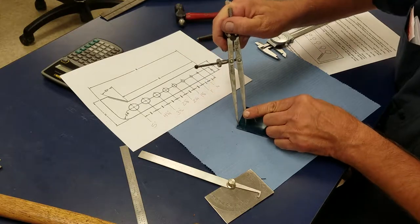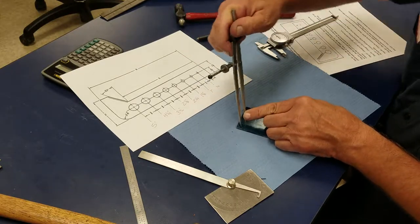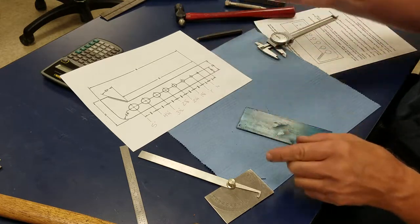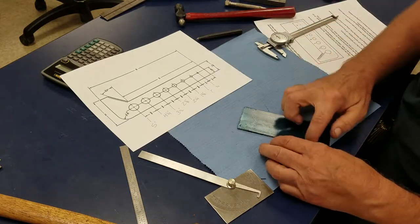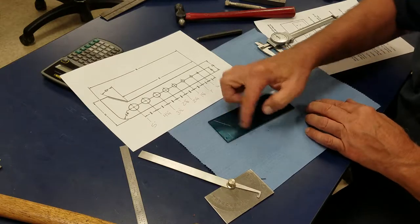I'm going to drop one leg into the prick punch mark and I'm going to scribe this radius. See there, I just scribed that radius right on there. If we mess up any lines it's not a big deal, we can always go back over with some dye-kem and clean it up, no big deal.